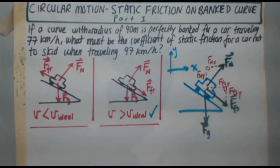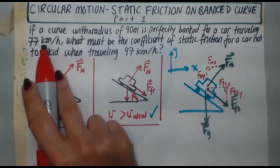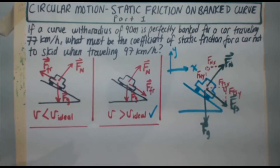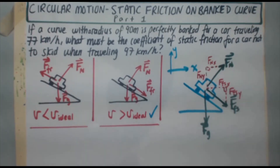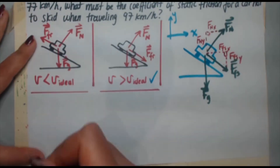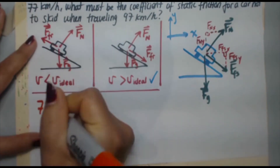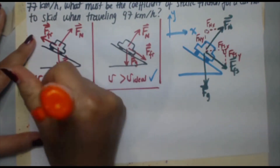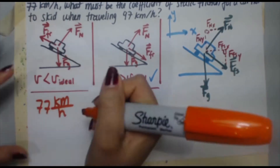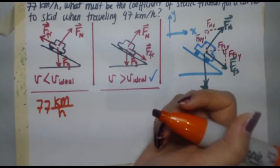The next thing I notice is that the speeds are given in kilometers per hour, and I can't solve the problem with that. I need everything in SI units. So the next step is to convert these speeds. I'll start with 77 kilometers per hour.